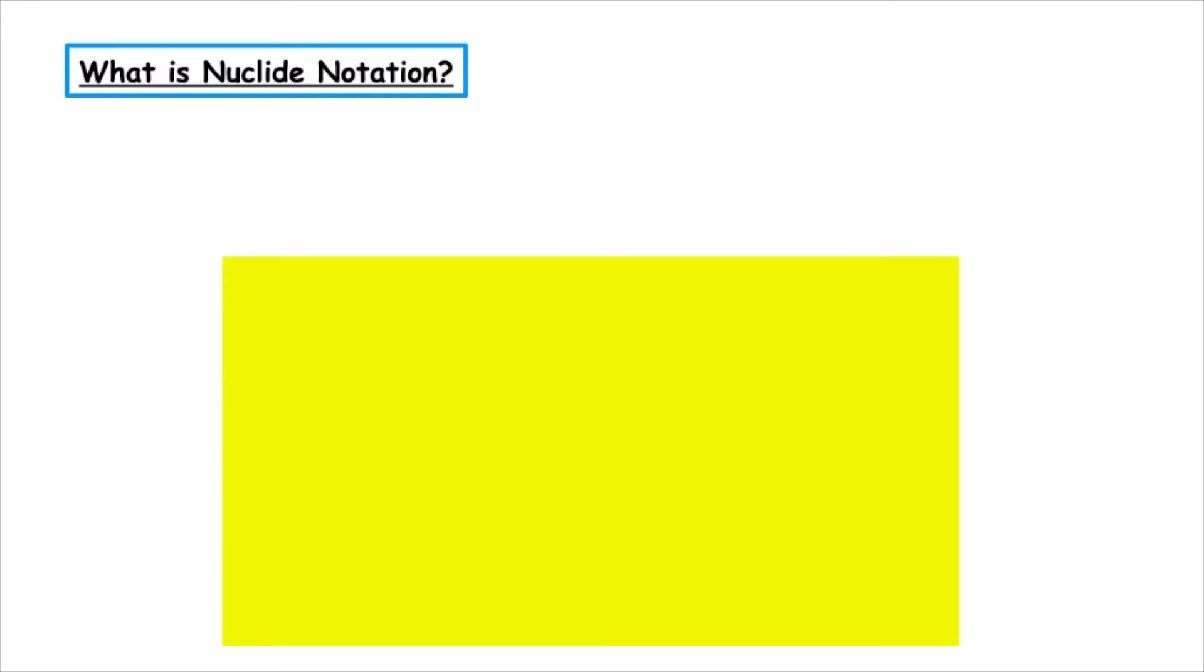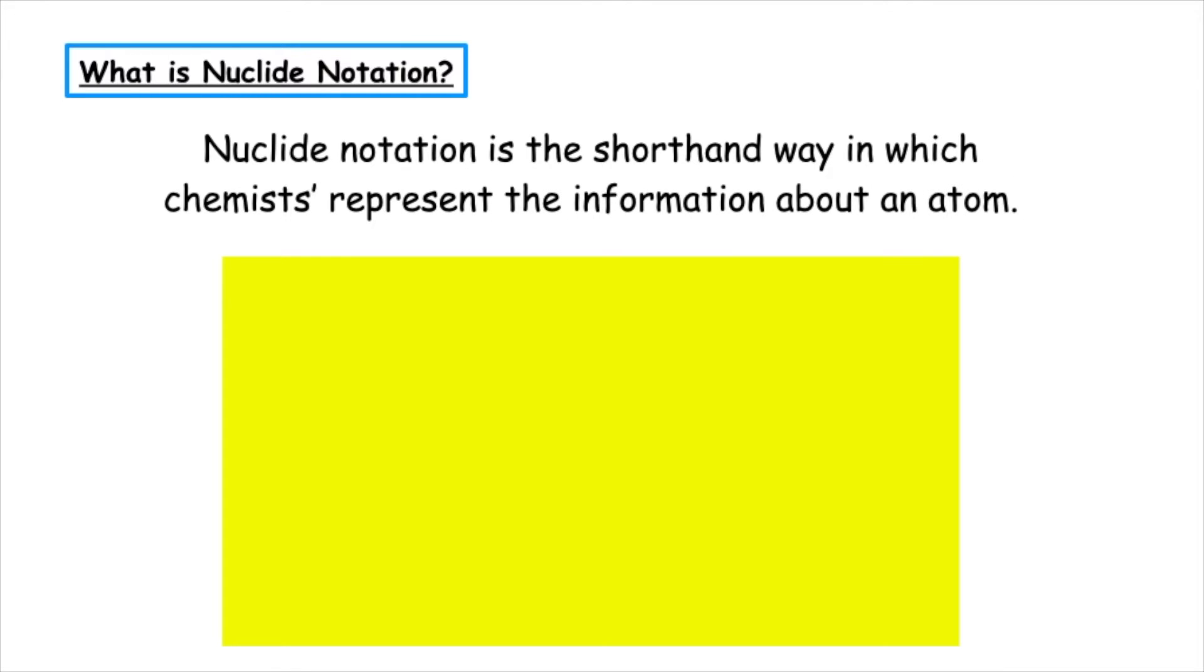So what is nuclide notation? Nuclide notation is the shorthand way in which chemists represent the information about an atom.